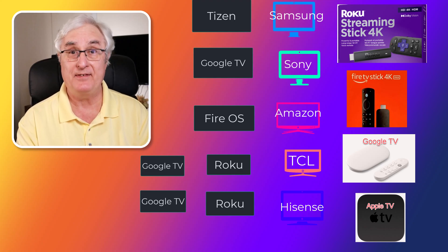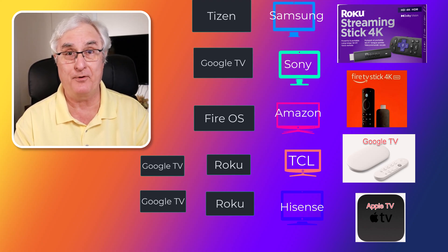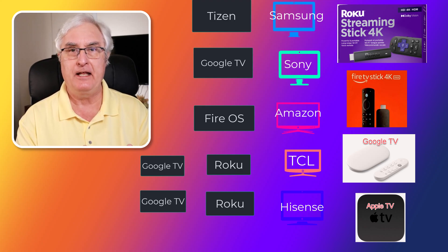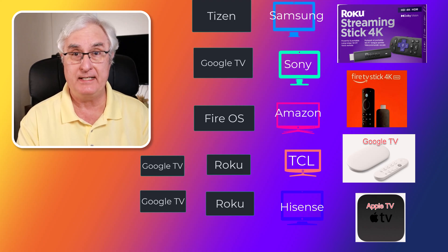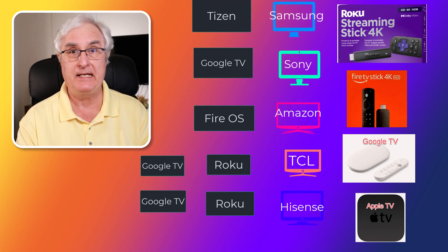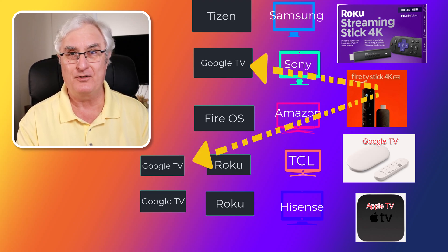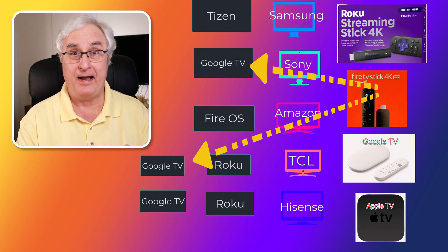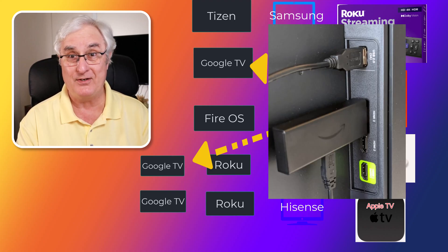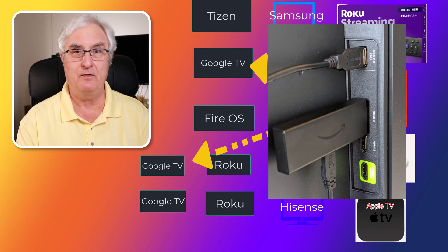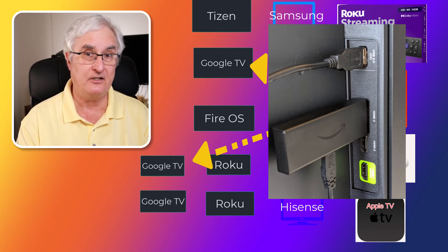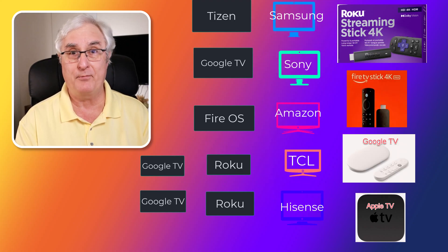This is a critical consideration in your TV purchase. It's important that you know the name of the operating system on your TV. Now suppose you have a Google TV and you want to add features with Alexa that aren't available on it. You might ask — can I make this into a Fire TV, running the Fire OS? Well, let's talk about four devices you can connect to your TV to change the operating system.